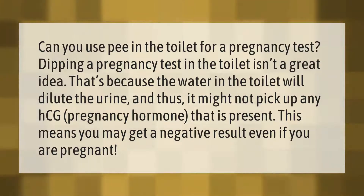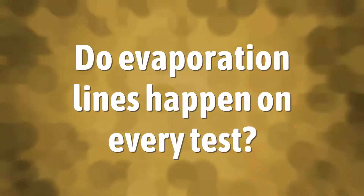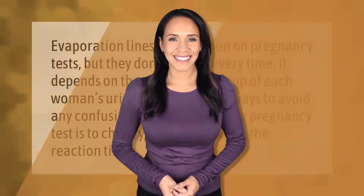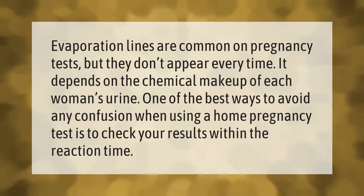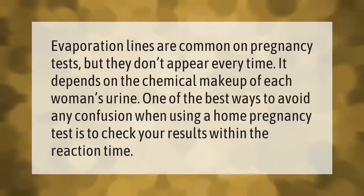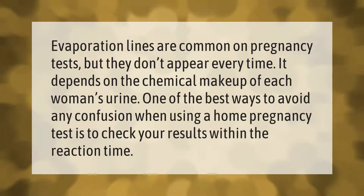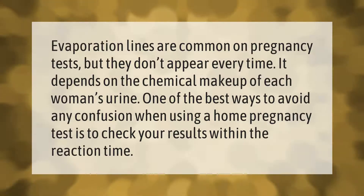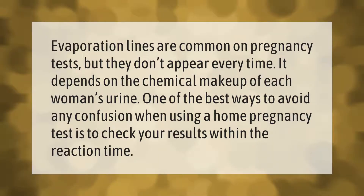This means you may get a negative result even if you are pregnant. Evaporation lines are common on pregnancy tests, but they don't appear every time — it depends on the chemical makeup of each woman's urine. One of the best ways to avoid any confusion when using a home pregnancy test is to check your results within the reaction time.